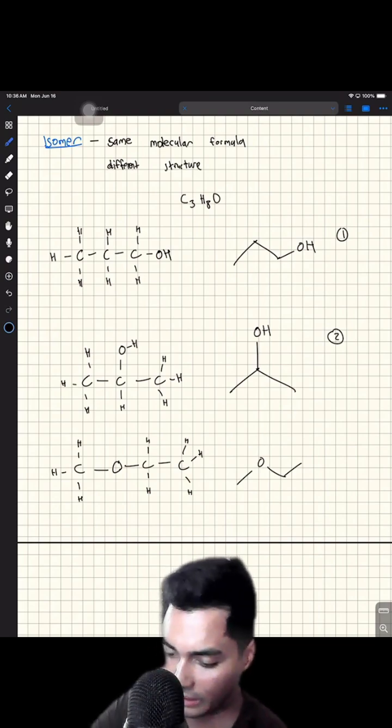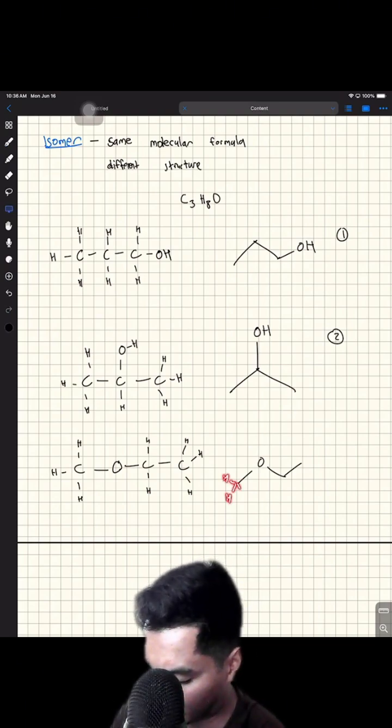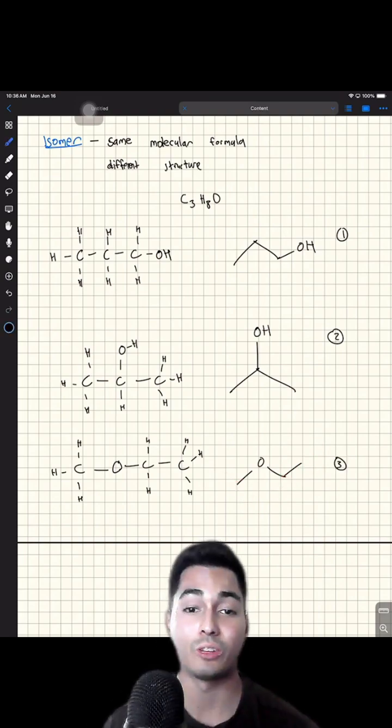And this guy is going to look like this with the line structure. Again we have the invisible hydrogens right there that live on these structures right there. So that is our third constitutional isomer.